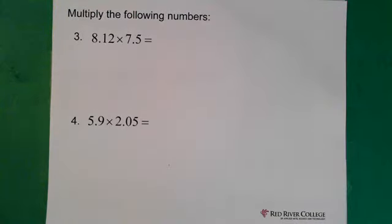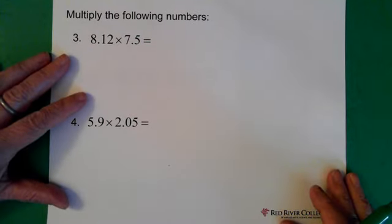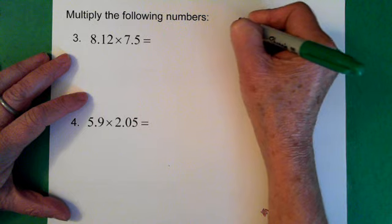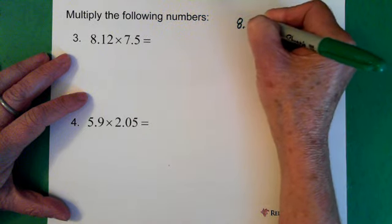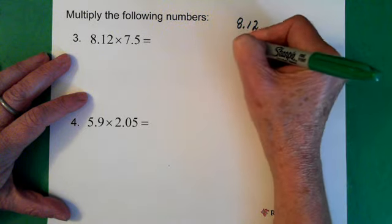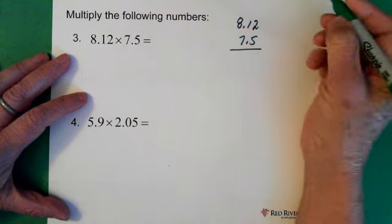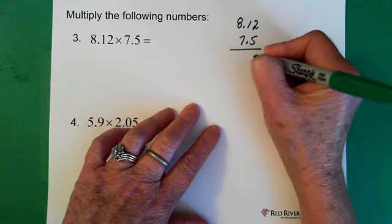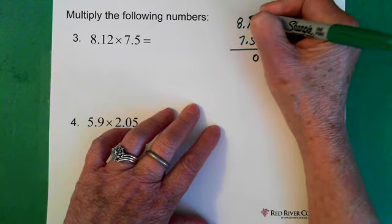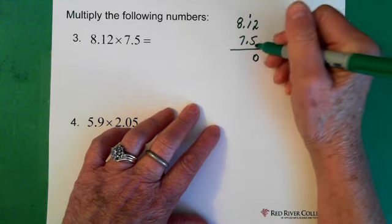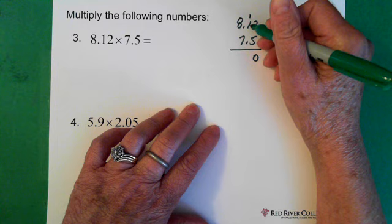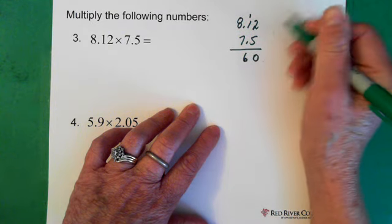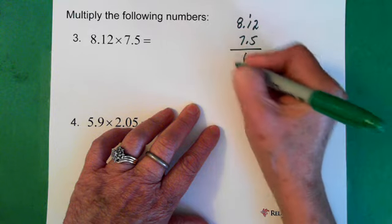Next question. Okay, 8.12 times 7.5. So 5 times 2 is 10. 0 here, a 1 up here. 5 times 1 is 5. We add the 1 and that gives us a 6. 5 times 8 is 40.